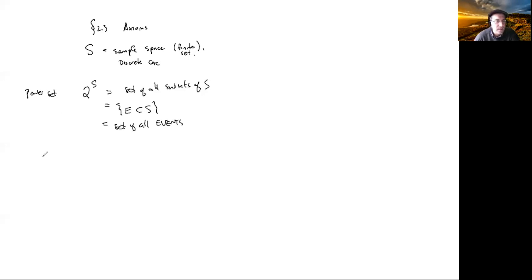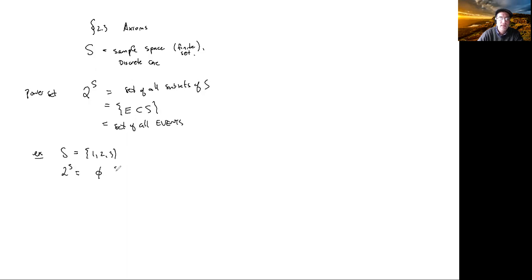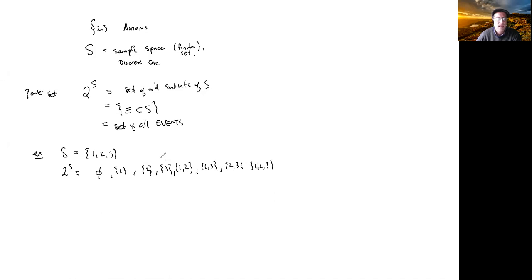Here's an example. Let's assume that S is given by the sample space {1, 2, 3}. So what is 2^S? Well, it's the empty set, the set {1}, the set {2}, the set {3}, the set {1,2}, the set {1,3}, the set {2,3}, and lastly the whole set {1,2,3}, which is just S. So how many are there? We have 8 elements total.